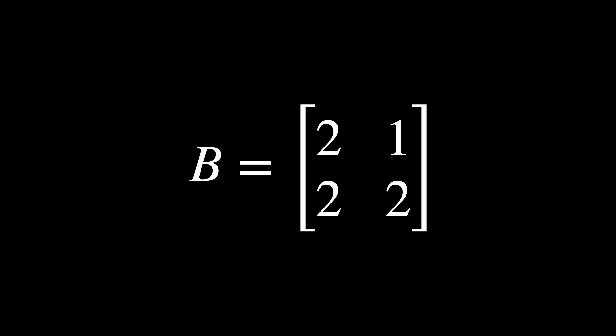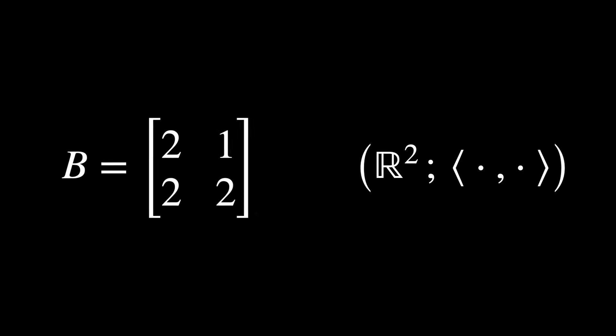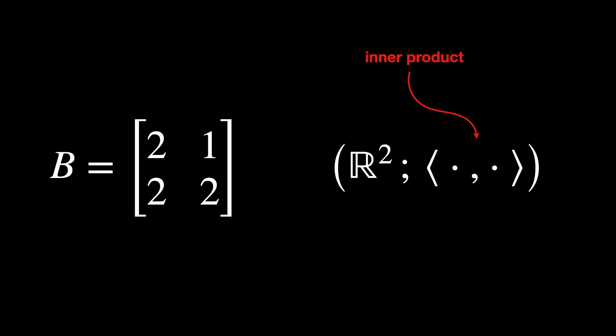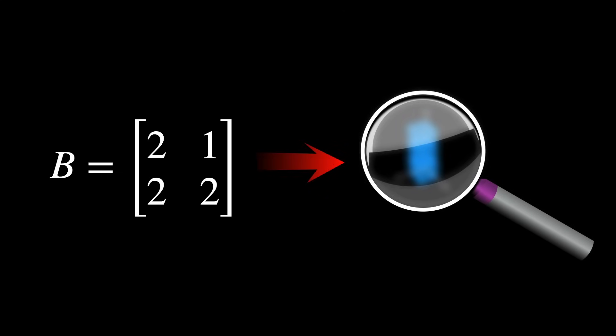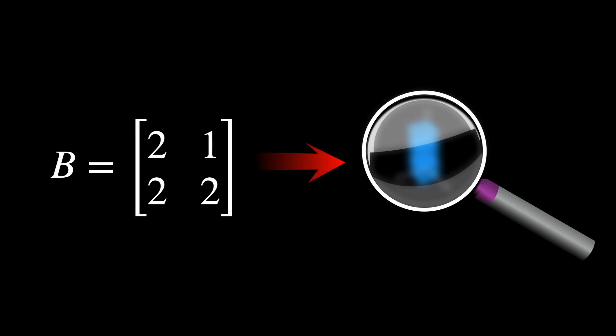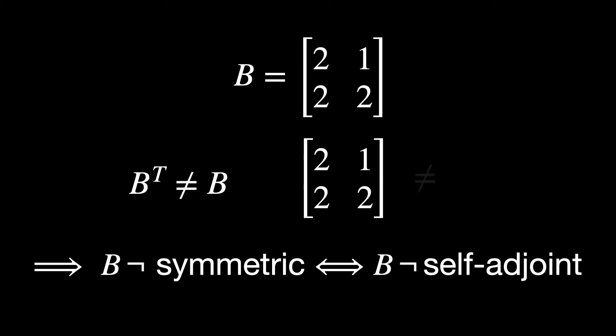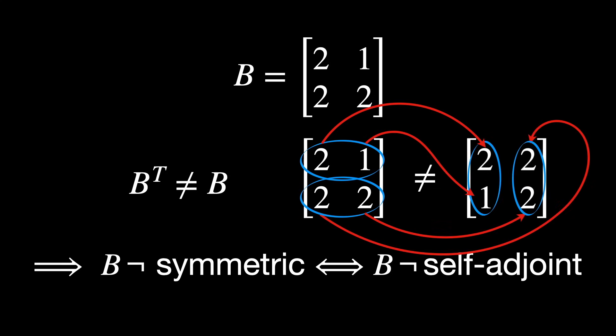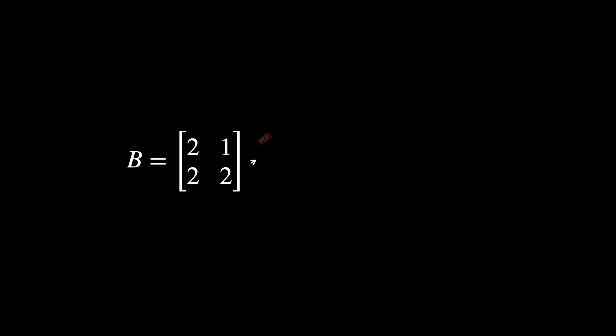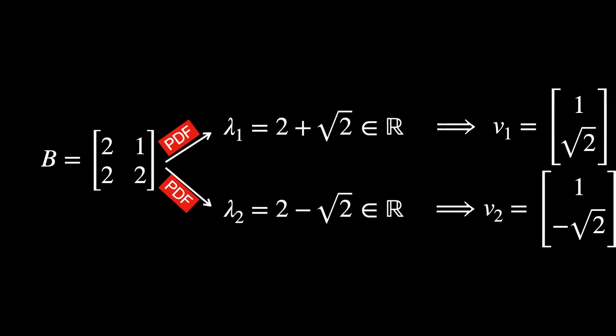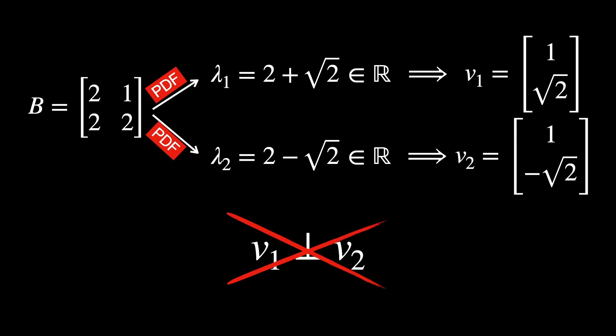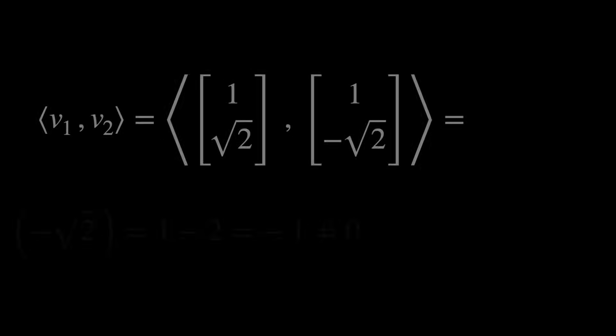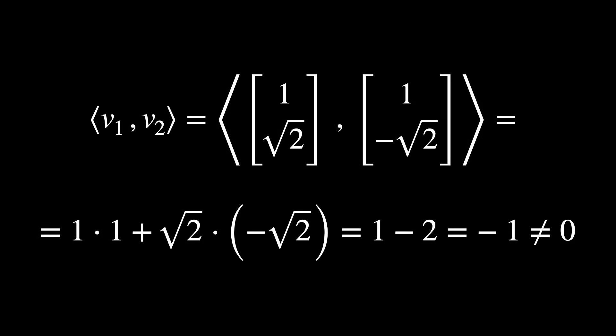Let's see another concrete example now. The non-selfadjoint operator B shown here on the same Hilbert space R2 with the standard inner product. This is like the blurry lens in our analogy, not very useful. Notice a few things. The transpose matrix is not the same as the original one, so B is not symmetric, which implies that B is not self-adjoint. Also, its eigenvalues are real, which is a good thing, but its eigenvectors are not orthogonal. After calculating their dot product, we get minus 1, which is not 0. That's not good. They do not form a basis of the Hilbert space in question.